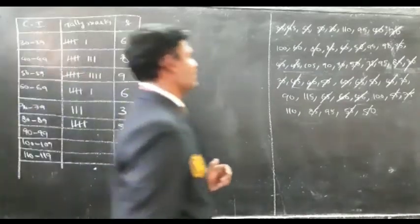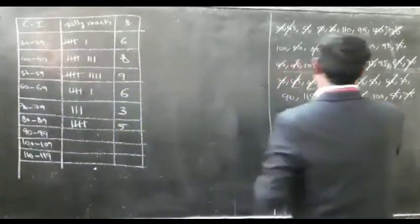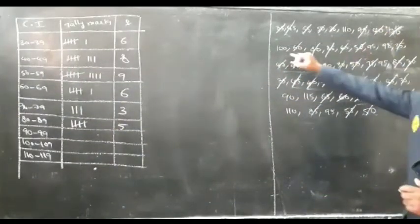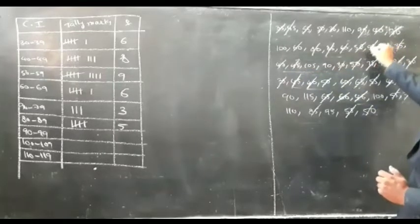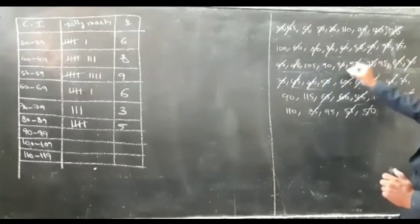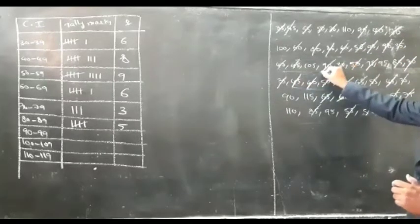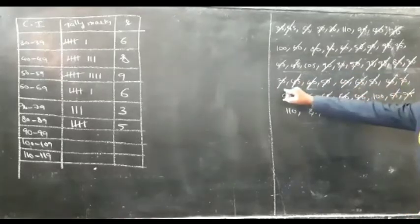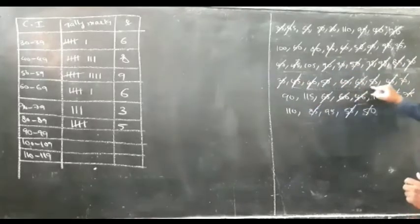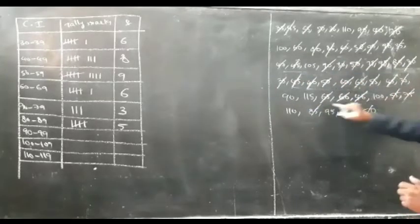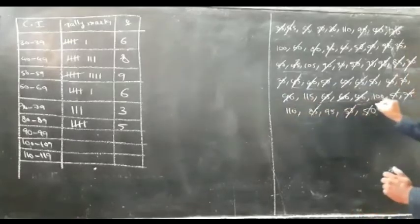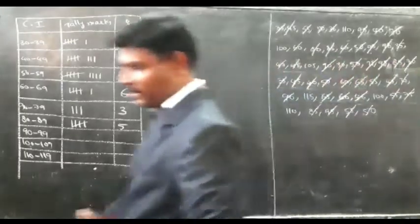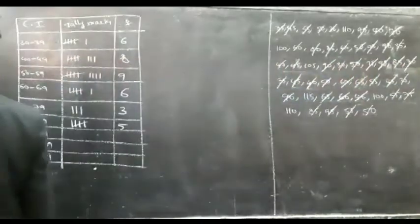For the class 90 to 99, counting gives us 7 values: 1, 2, 3, 4, 5, 6, 7. So 7 oranges fall in the class 90 to 99.